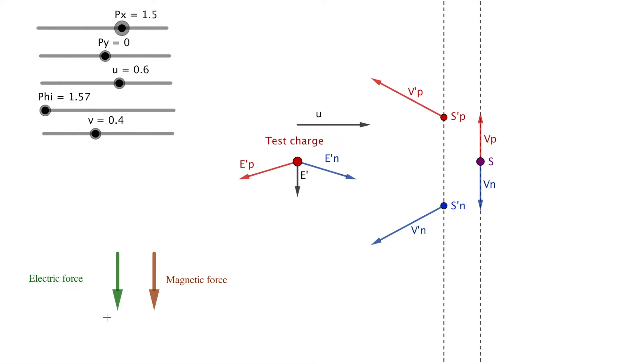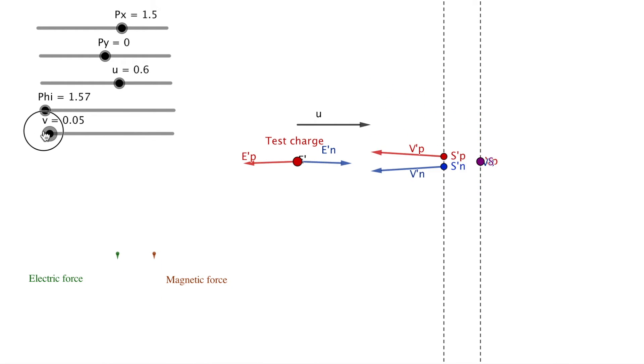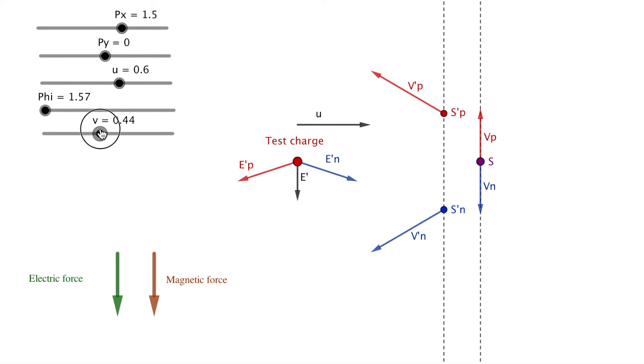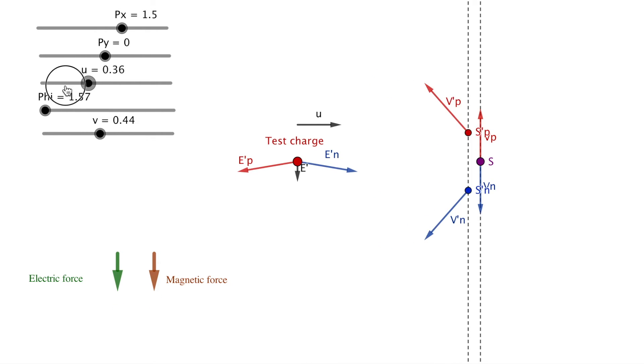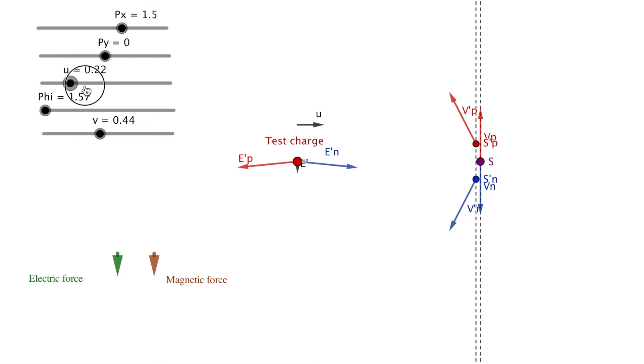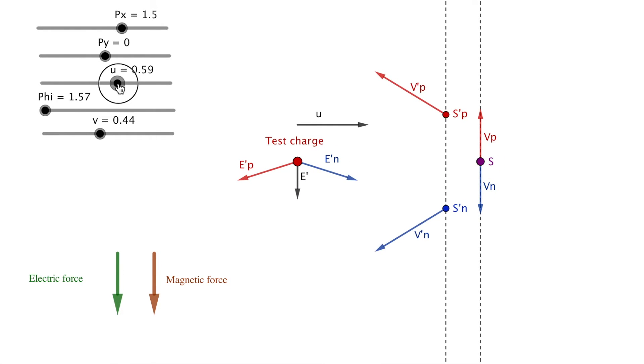To demonstrate this for more than one scenario, I've created the sliders above. U and v are the velocities and range from zero to one, where one means the particles move at the speed of light. If I turn v to zero, the forces disappear because we no longer have a current in the wire. If I turn u to zero, the test charge is no longer in motion and the primed and unprimed systems become one.